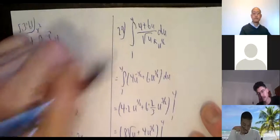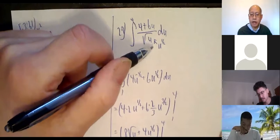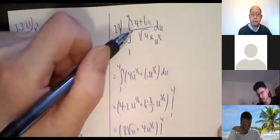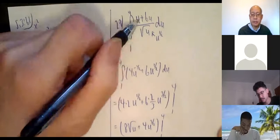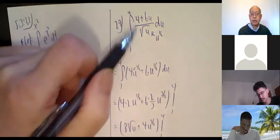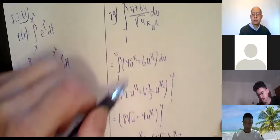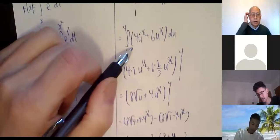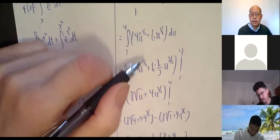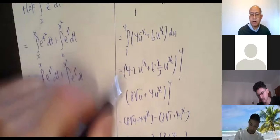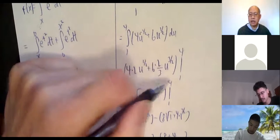Problem 29, also requested: integral from 1 to 4 of (4 + 6u) over √u, du. Treat √u as u to the one-half. So 4 divided by u to the one-half is 4u to the negative one-half, and 6u divided by u to the one-half is 6u to the one-half. Then apply the power rule: 4u to the negative one-half integrates to 4u to the positive one-half divided by one-half, which means times 2; plus 6u to the three-halves divided by three-halves, which means times two-thirds.